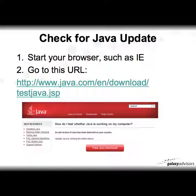Start your browser — Internet Explorer, Firefox, Safari, Chrome, and so on. Go to this URL: www.java.com/en/download/testjava.jsp, and once you've loaded that page you're going to see this Java screen show up.